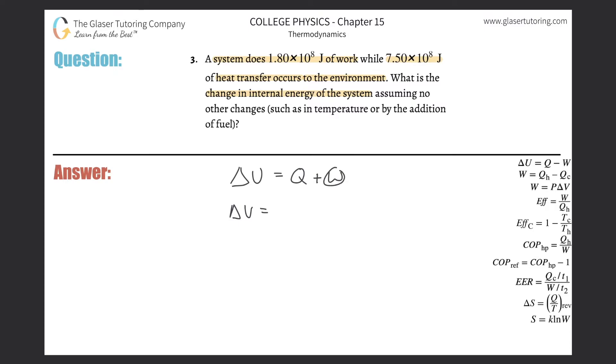So that being the case, they tell us that 7.5 times 10 to the 8 joules of heat transfer occurs to the environment. Does that sound, from the perspective of a system—pretend your system is a pan on the stove.